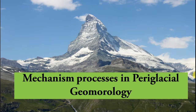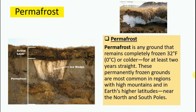Permafrost and the active layer are the two most striking features of periglacial areas. The term permafrost was first used by H.W. Muller, while K. Bryan used the term 'gelisol' — permanently frozen soil. Permafrost is any ground that remains completely frozen at zero degrees or cooler for at least two years.